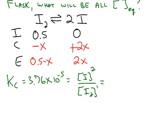And if we substitute in from our ice chart, the concentration of the product is 2x, and that has to be squared. The concentration of the reactant is 0.5 minus x, and that's raised to the first.